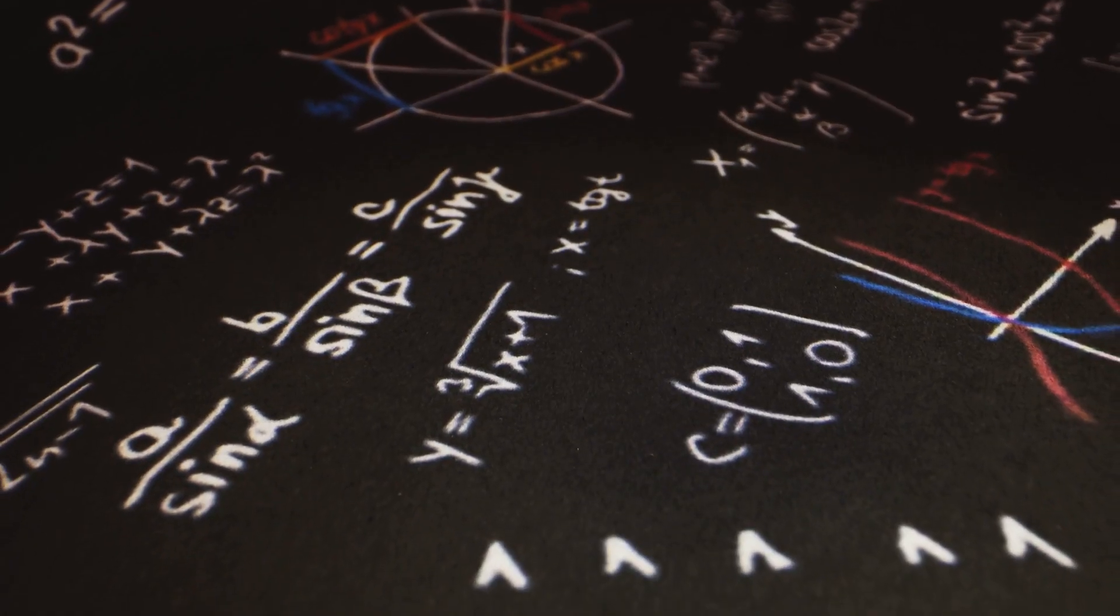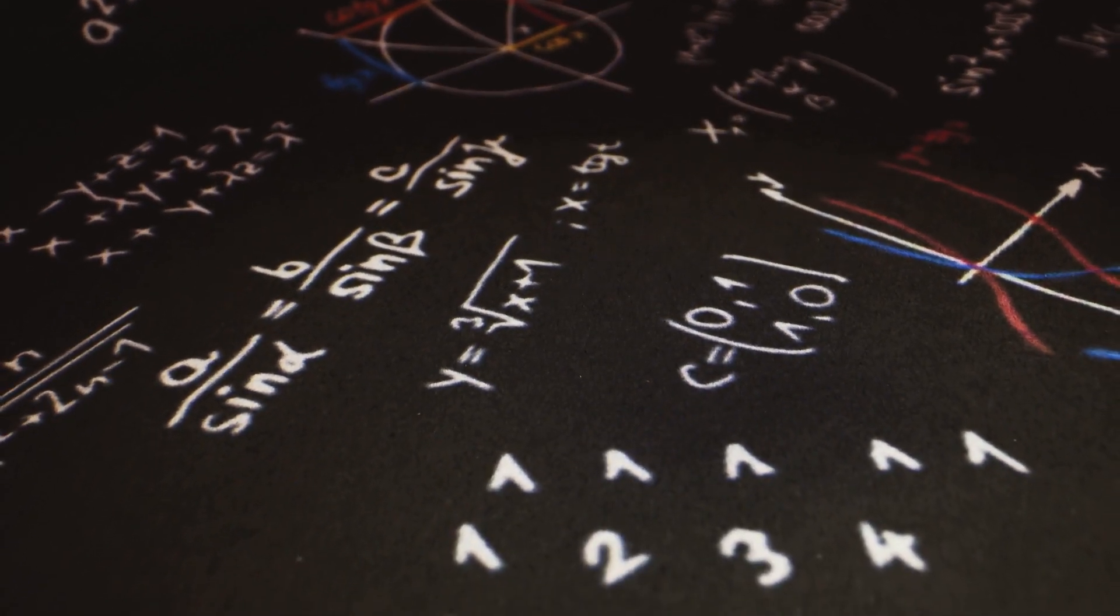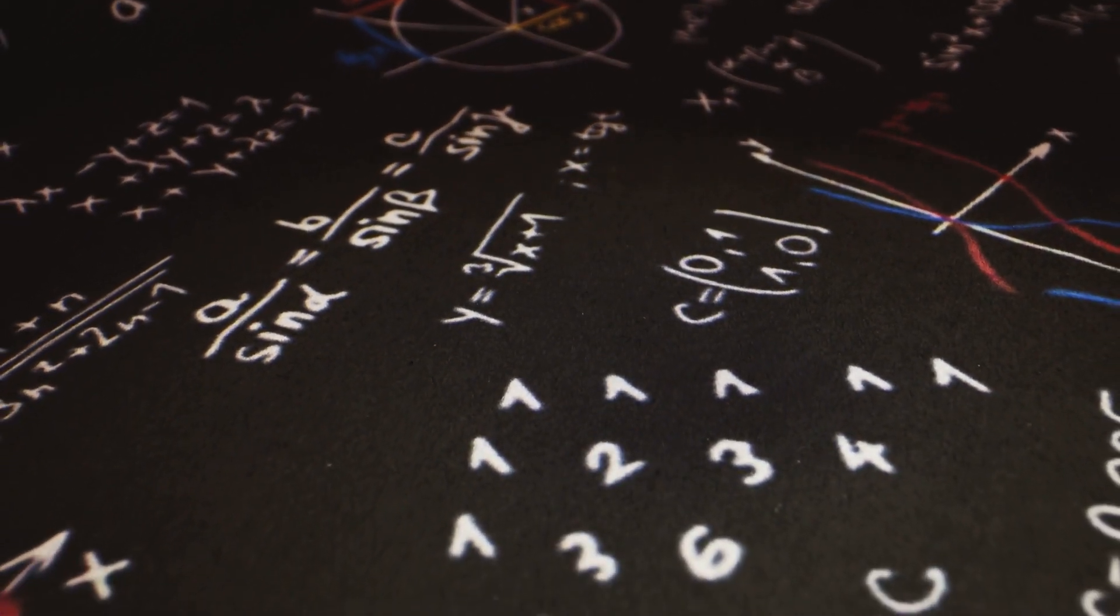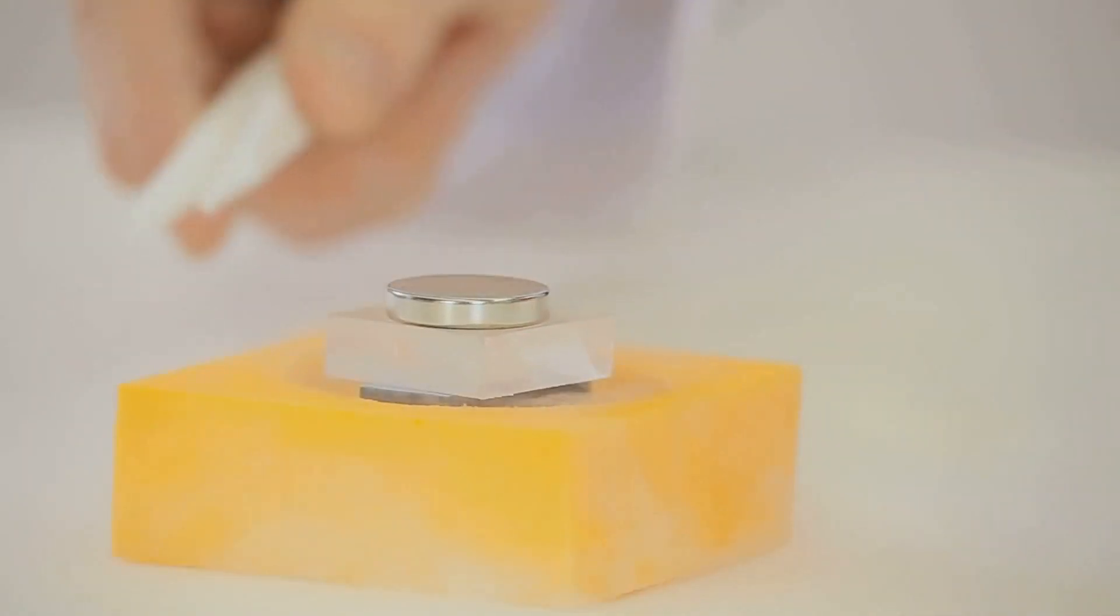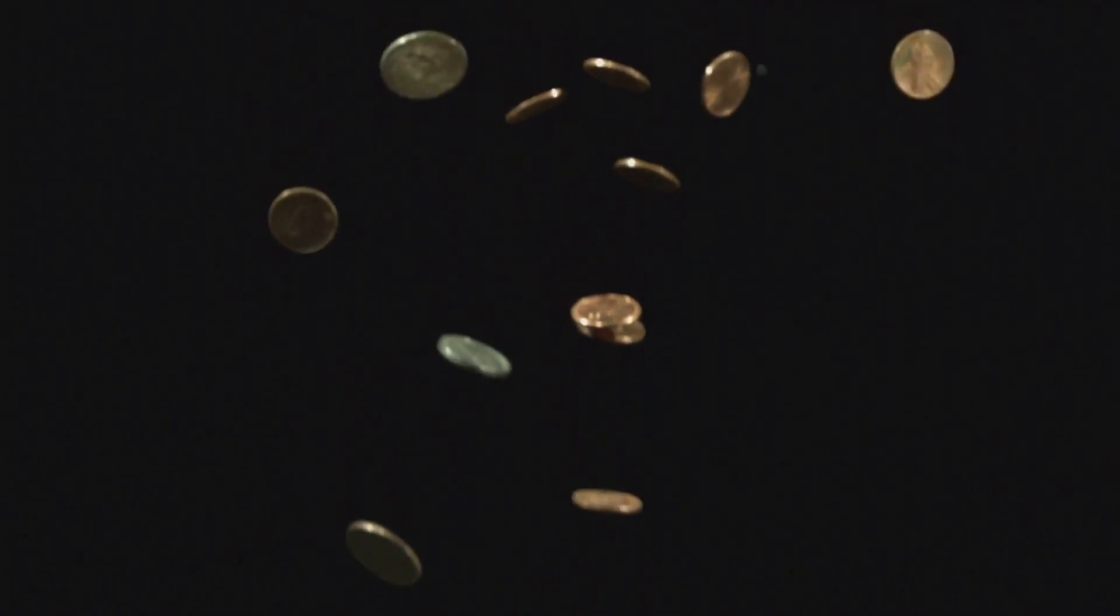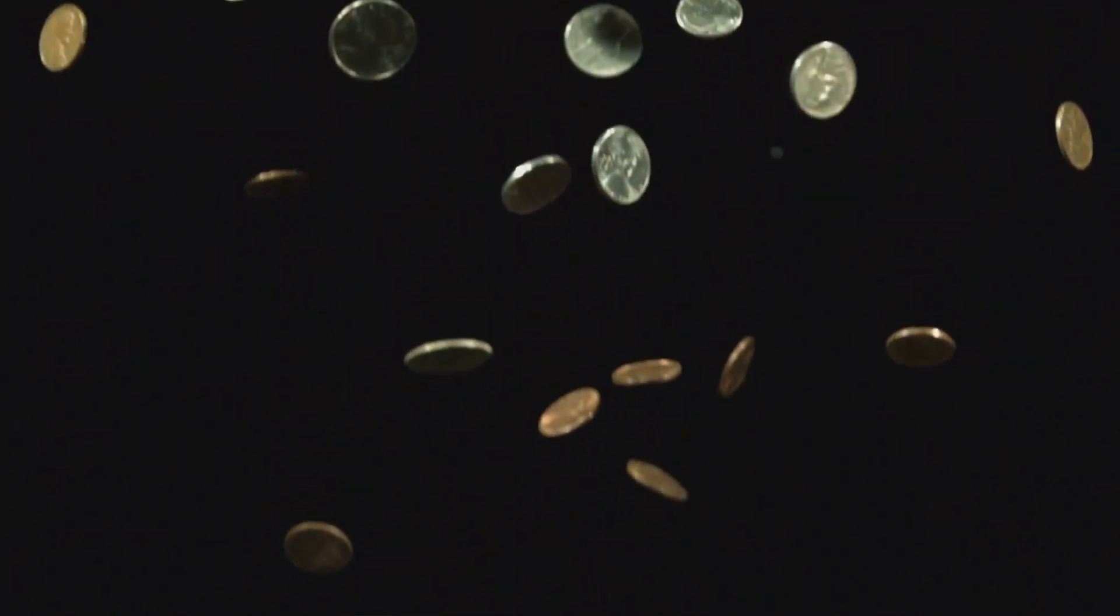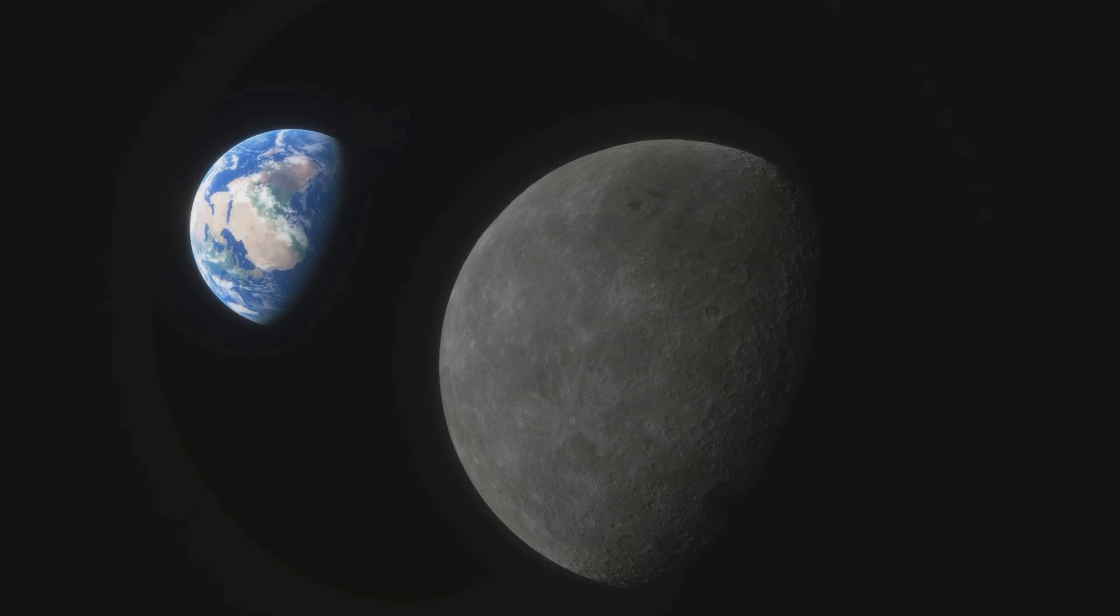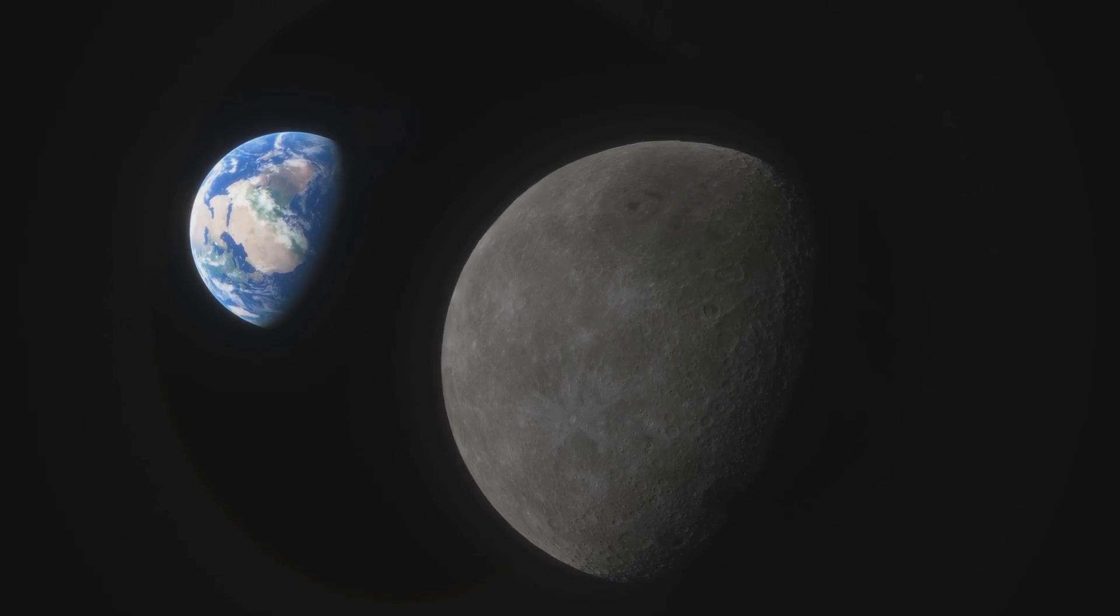Newton's Law provided a mathematical framework for understanding gravity's influence, allowing scientists to calculate the gravitational force between any two objects with mass. It explained why objects fall to the ground at the same rate, regardless of their weight, and why the Moon orbits the Earth instead of flying off into space.